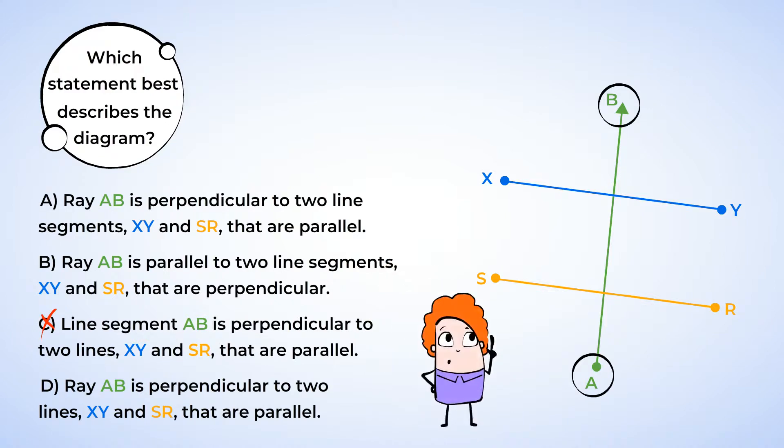Next, we can look at the relationship between the ray and the other lines, and the ray appears to intersect the lines and form right angles. So this means that ray AB is perpendicular to XY and SR. So we can cross off statement B. And it also appears that XY and SR will never intersect, and that means that they are parallel.